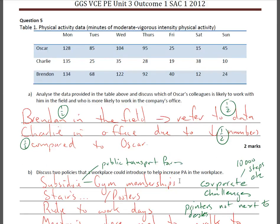Moving on to the second part of the SAC. Questions are no longer with respect to Lift for Life. Table 1 shows physical activity data — minutes of moderate to vigorous intensity physical activity — for three different people: Oscar, Charlie, and Brendan. Analyse the data and discuss which of Oscar's colleagues is likely to work with him in the field and who is more likely to work in the company's office. Brendan is in the field — refer to data — as he spends a greater number of minutes undertaking moderate to vigorous physical activity. Charlie is in the office due to a smaller number of minutes compared to Brendan. You must use data.